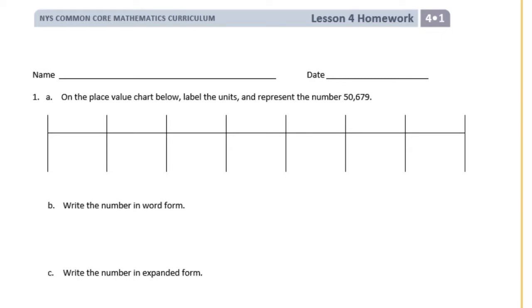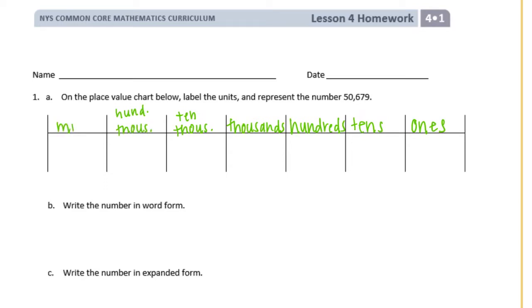We have the ones place, tens, hundreds, thousands, ten thousands, hundred thousands, and then millions.